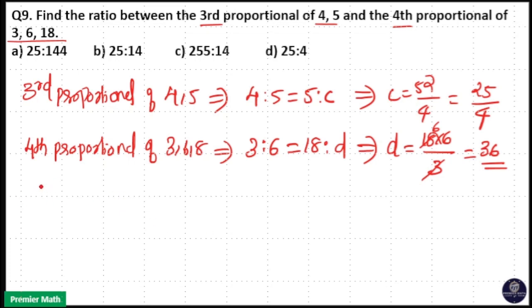The ratio is 25 by 4 to 36. That means 25 to 4 into 36. 4 into 36 equals 144. So 25 to 144. Option A is your answer.